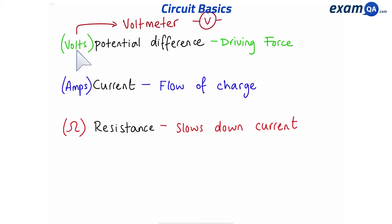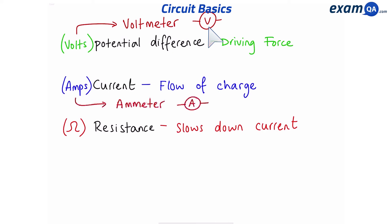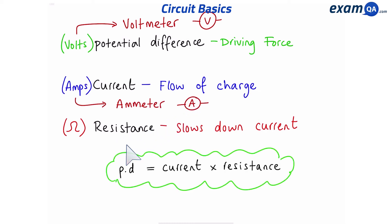You can work out the voltage of something using a voltmeter, and you can work out the current using an ammeter. To work out resistance, you need to use an equation. The equation to memorize is: potential difference equals current times resistance.